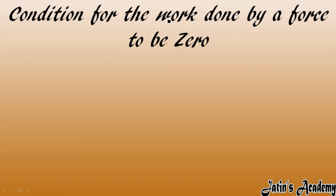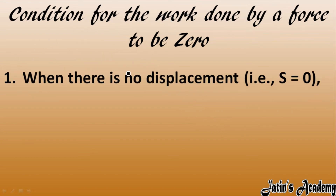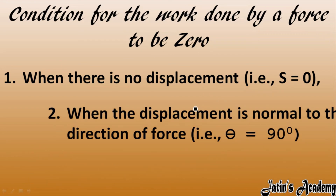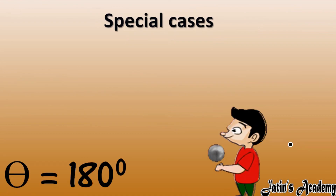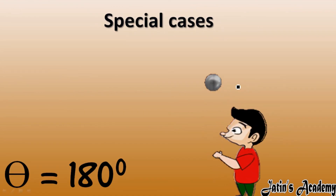Here you will see the conditions under which work done by a force is zero. Under two conditions: first, when there is no displacement, work done is zero. Second, when the displacement is normal to the direction of force — that is, when the angle between force and direction of displacement is 90 degrees — those examples come under zero work done.